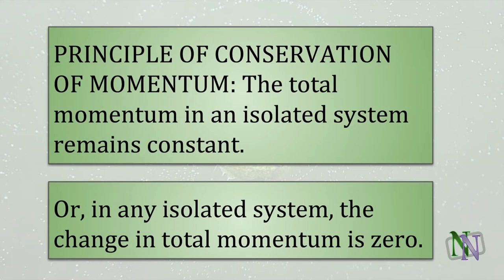The reason that we're interested in momentum is because of this very important principle, which allows us to make calculations about interacting objects. It applies to an isolated system, which has no external forces exerted on it. The principle says that the total momentum in an isolated system is constant. For example, the momentum in the bowling ball before it hits the pins is equal to the momentum in the ball and all of the pins afterwards. Another way to say this is that the change in total momentum is zero.